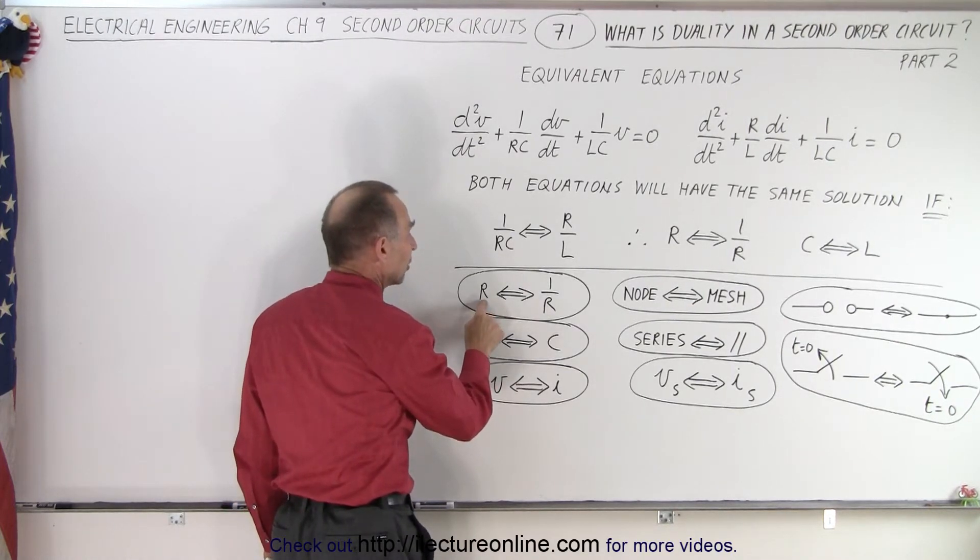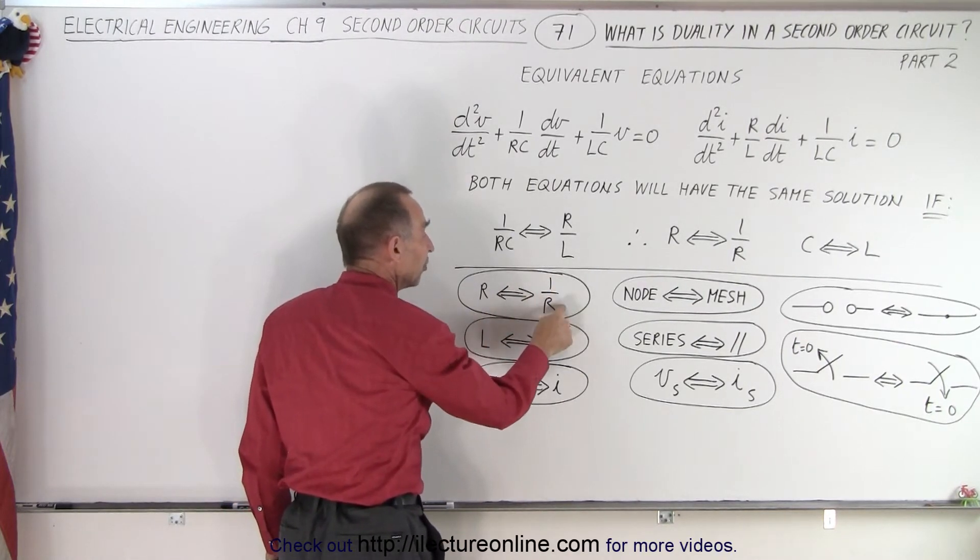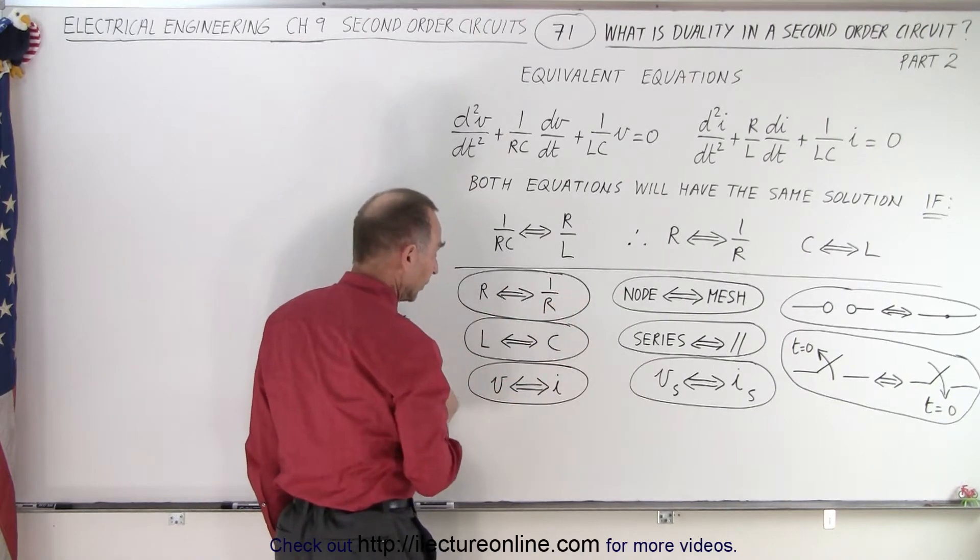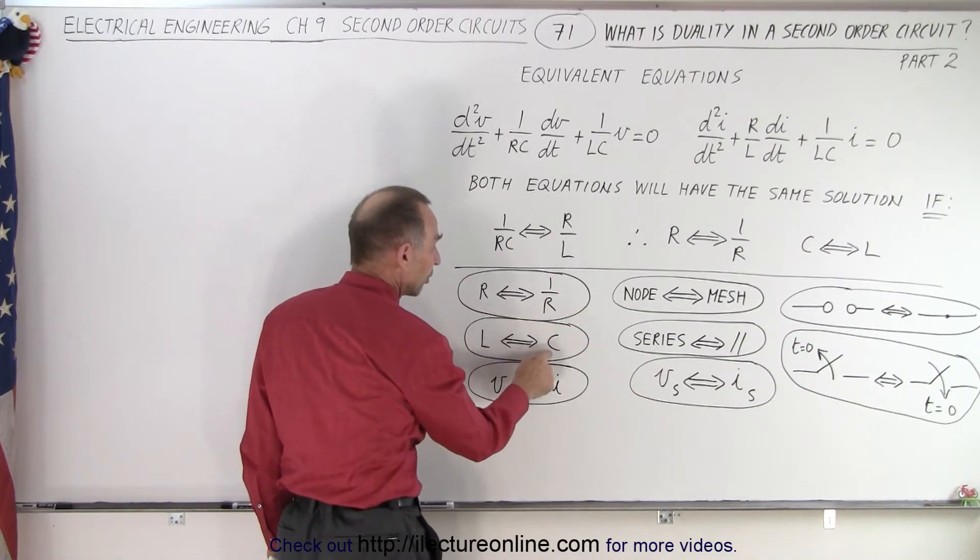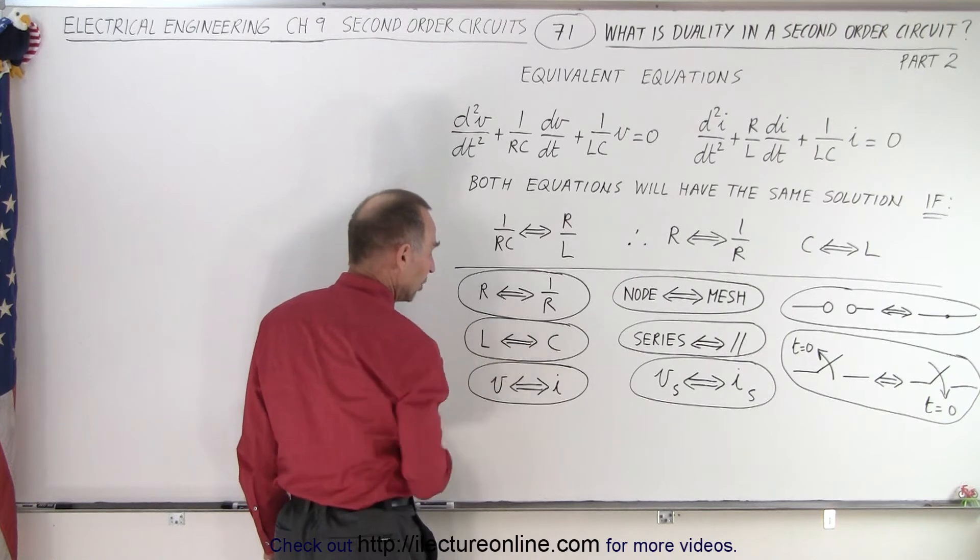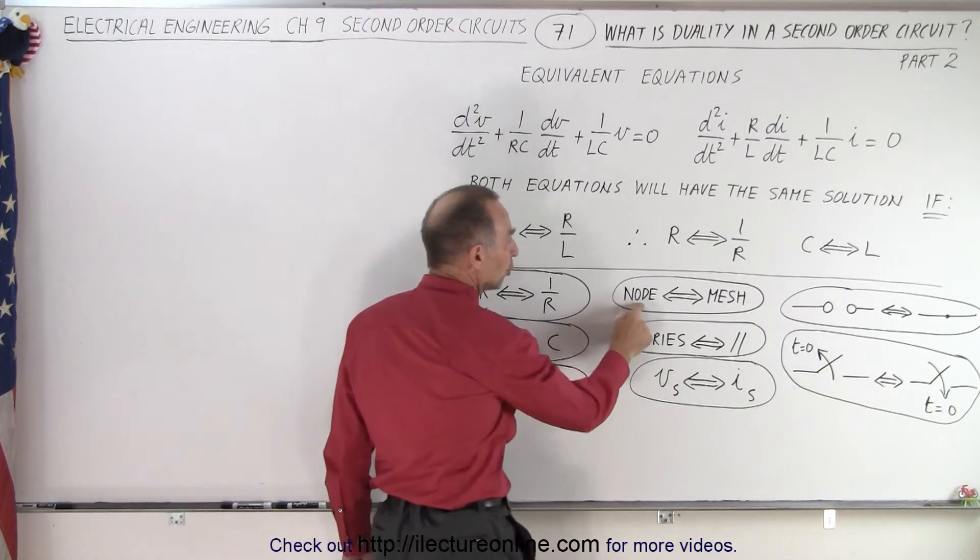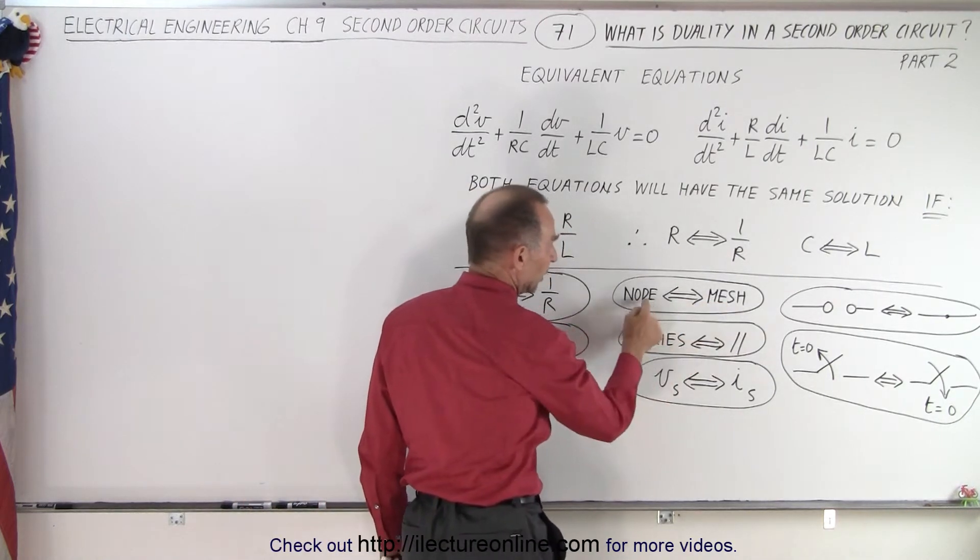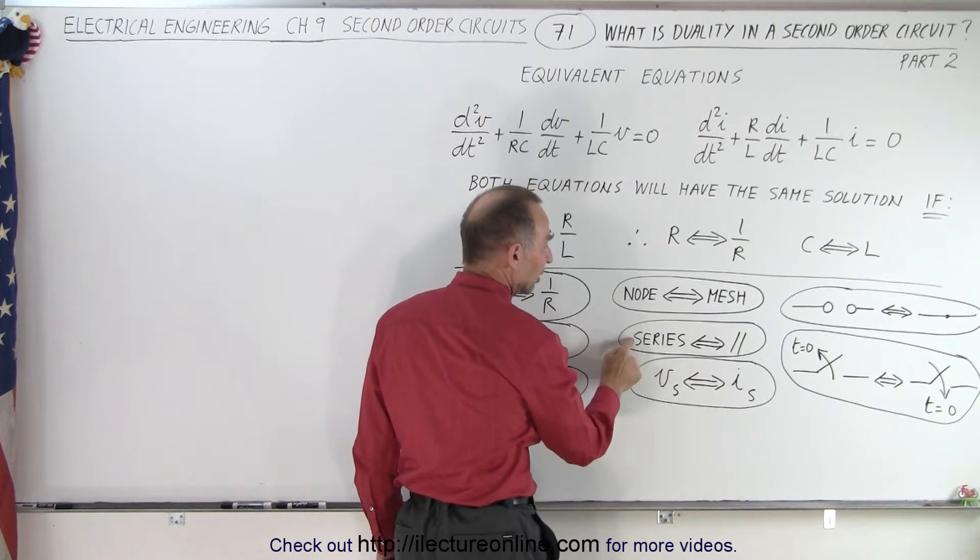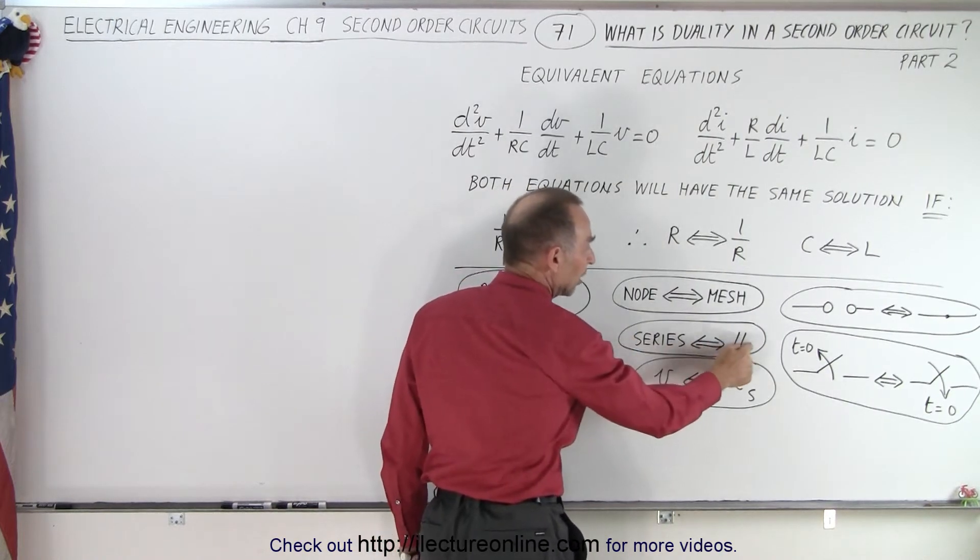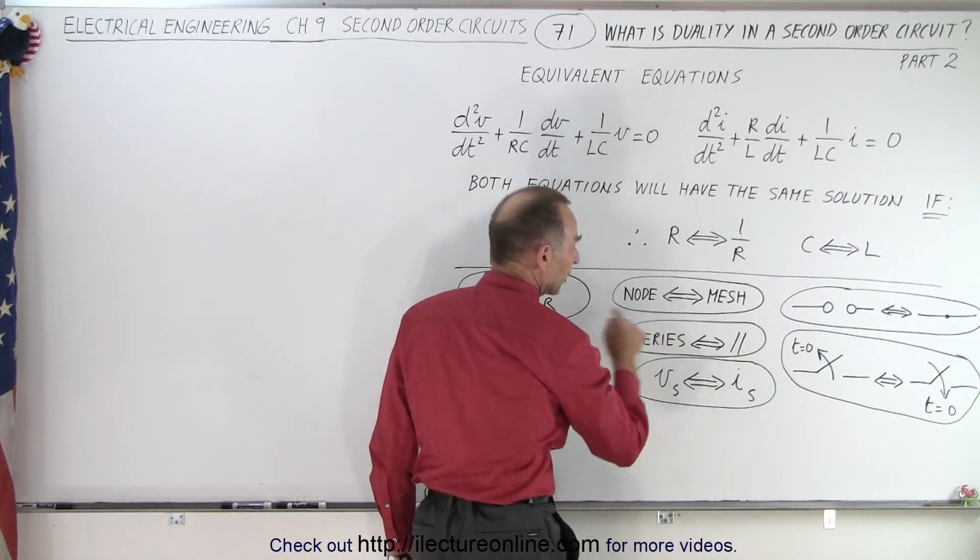In order to accomplish that, when you convert from one circuit to another, you must do the following things: Whatever resistance you have in one circuit becomes the inverse of that resistance in ohms in the other circuit. An inductor will change to a capacitor and a capacitor will change to an inductor. The voltage inside the circuit will become the current and the current will become the voltage. A node will become a mesh and the mesh will become a node. A series connection will become a parallel connection and a parallel connection will become a series connection.